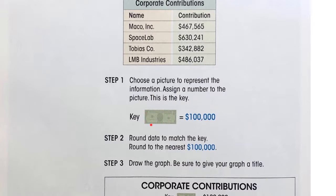So maybe we put an image of money equaling $100,000. So that's the key. Each money picture is $100,000.